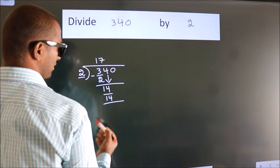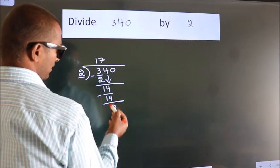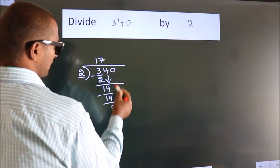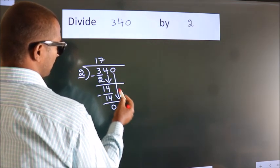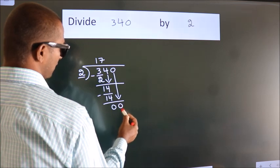Now, we subtract. We get 0. After this, bring down the beside number. So, 0 down. So, 0.